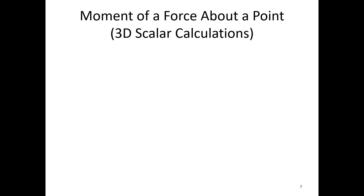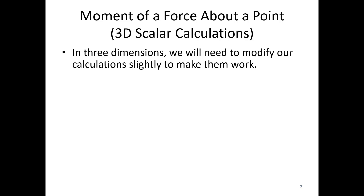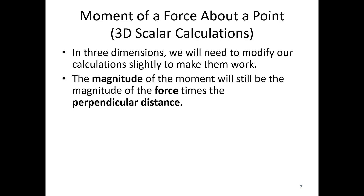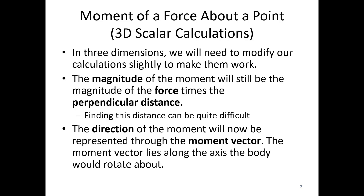Now let's talk about 3D. In three dimensions, we'll need to modify our calculations slightly. The magnitude of the moment is still going to be the magnitude of the force times the perpendicular distance — that part does not change — but finding this distance can be quite difficult. The direction of the moment now has to be represented as a moment vector. The moment vector is going to lie along the axis that we will be rotating the body about — the axis of rotation — and we're going to use something called the right-hand rule to indicate the direction on that axis.